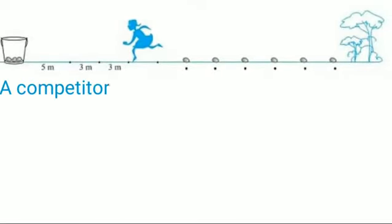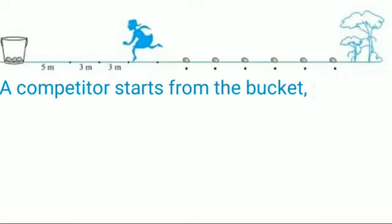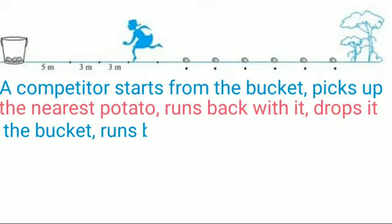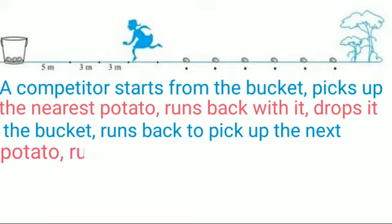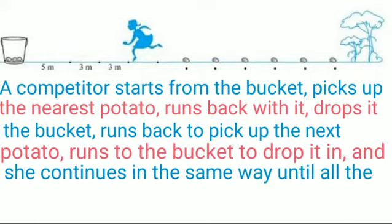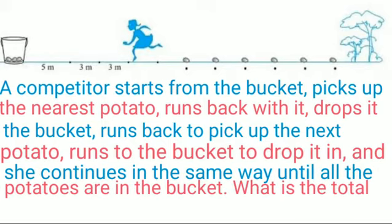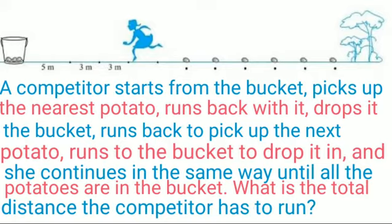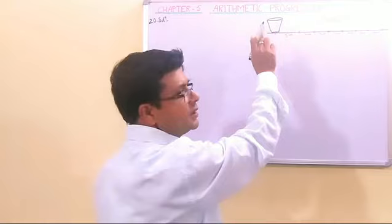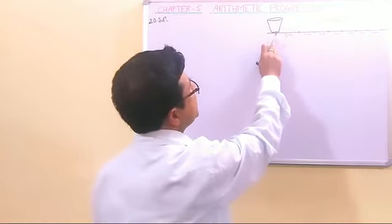A competitor starts from the bucket, picks up the nearest potato, runs back with it, drops it in the bucket, runs back to pick up the next potato, runs to the bucket to drop it in, and she continues in the same way until all the potatoes are in the bucket. Here you can check the figure. This is the bucket, the competitor here in the figure, competitor.